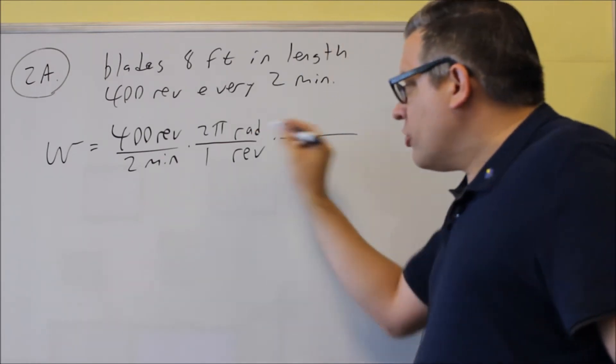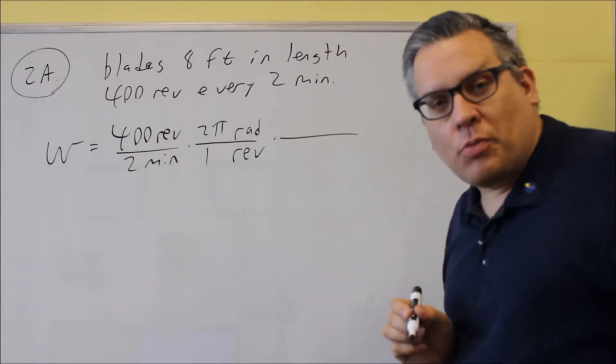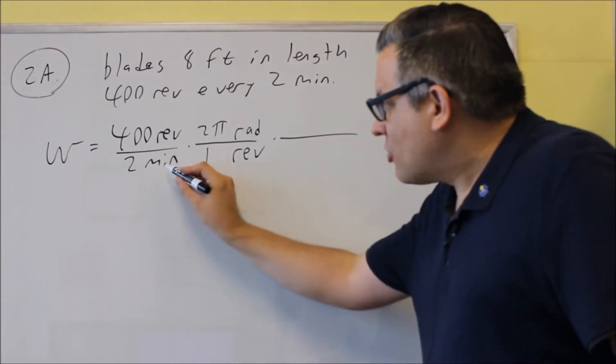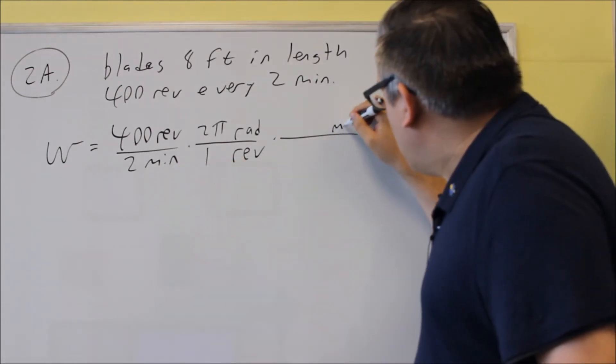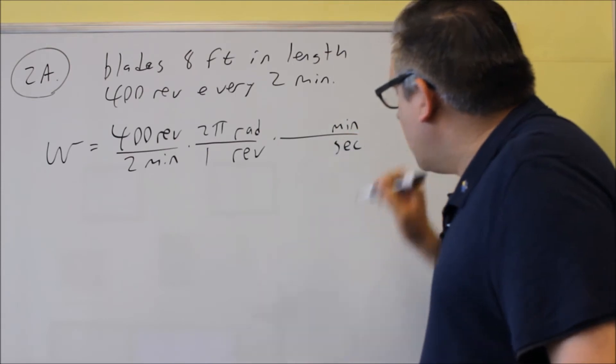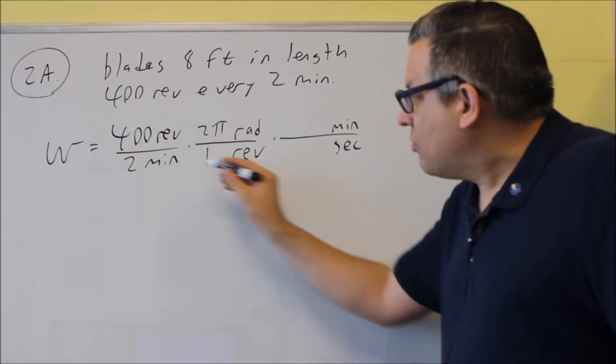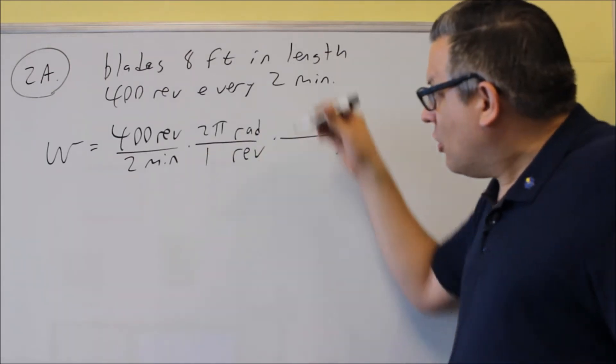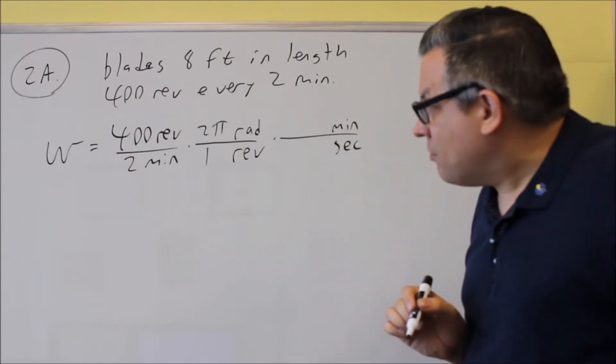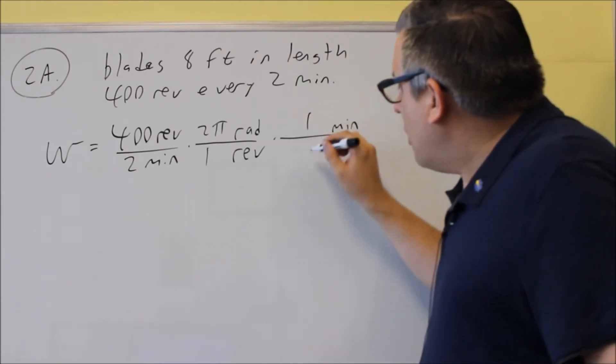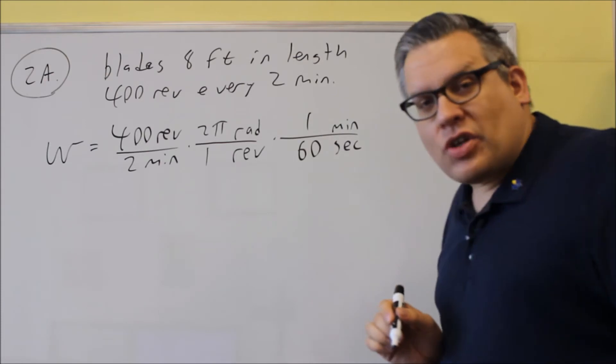So if I were to do this it would be in radians per minute but we want radians per second. So I want the minutes to cancel out. I'm going to put the minutes up here and then the seconds will be down below. So again the minutes will cancel and I'll get rads per second left over. So one minute is the same thing as 60 seconds.